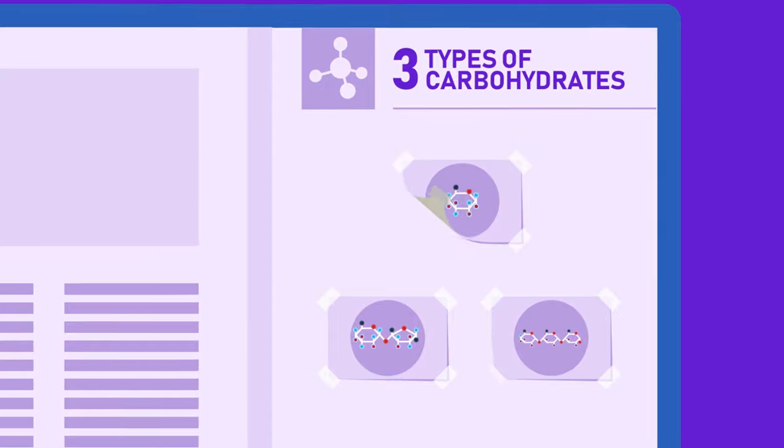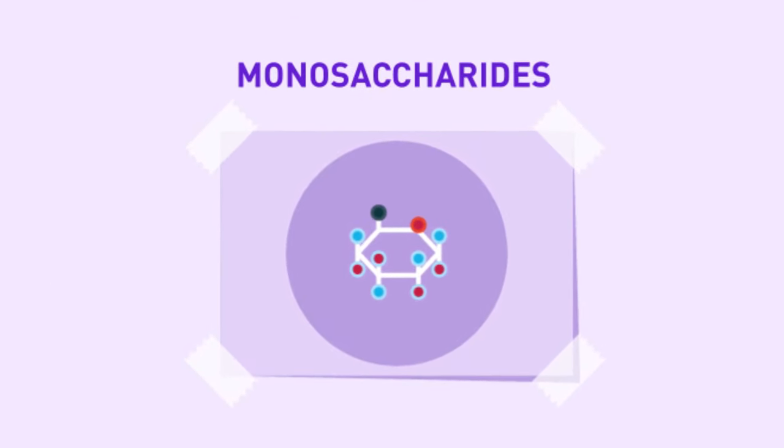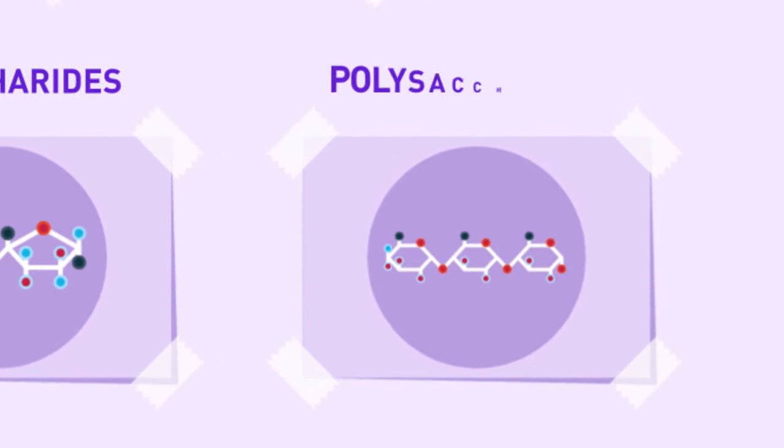There are three main types of carbohydrates: monosaccharides, disaccharides and polysaccharides.